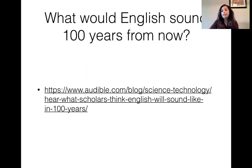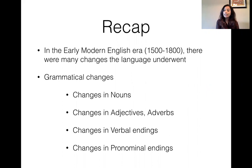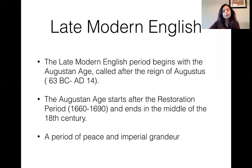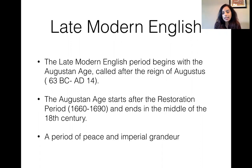So we started talking about the Early Modern English era — that's the 1500s to 1800s — and we looked at a lot of the grammatical changes that happened to the English language during that period. The Late Modern English period actually begins with the Augustan age, named after Augustus who ruled from 63 BC to AD 14. The Augustan age starts after the restoration period, so it's 1660 to 1690, and it ends in the middle of the 18th century.